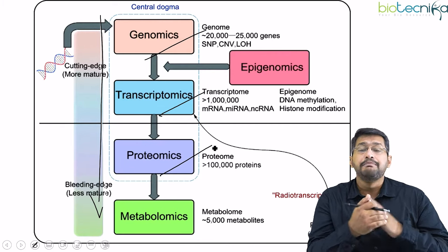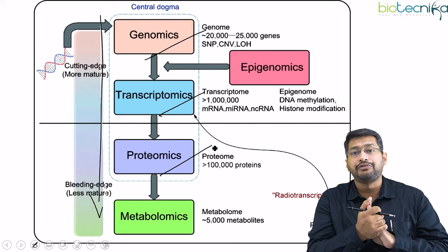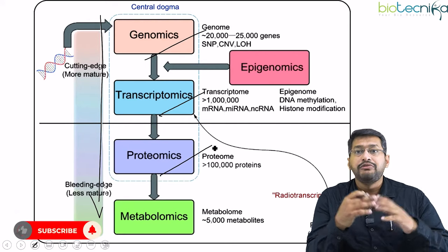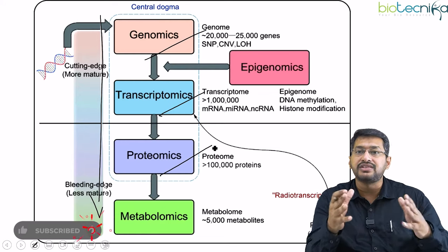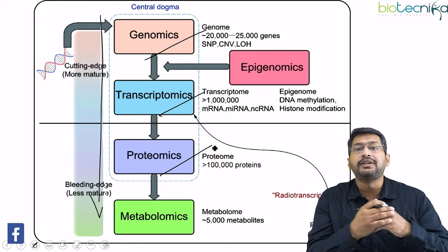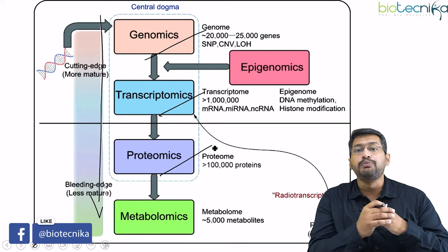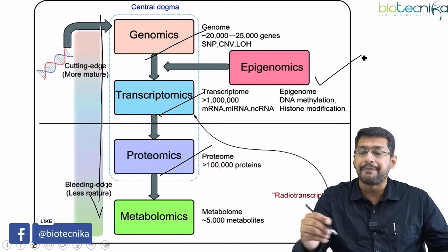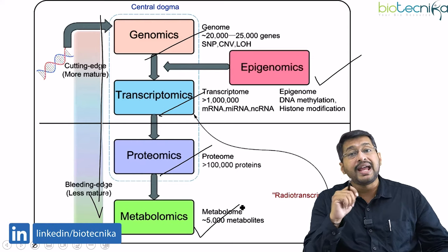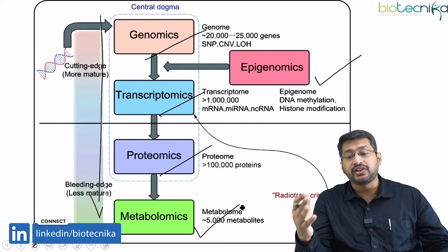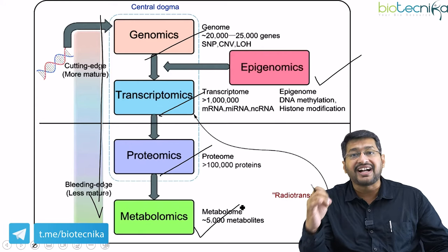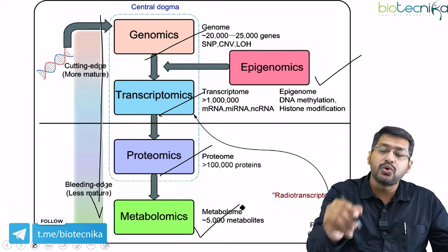However, because of the advent of more science and more data, people thought we cannot restrict the central dogma to only these three components. Two more new components were added: epigenetics and metabolomics. Epigenetics or epigenomics is a branch that talks about certain factors which actually control the DNA.